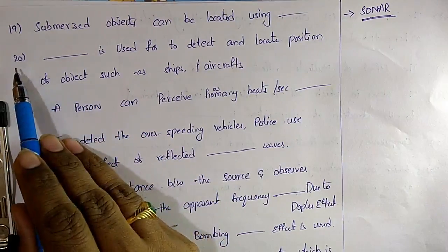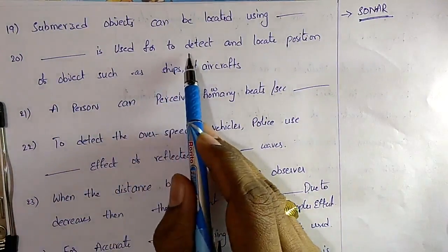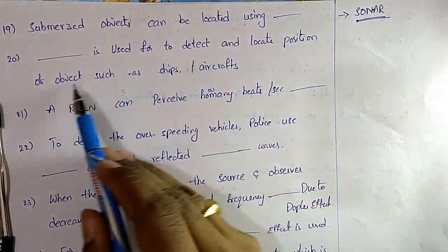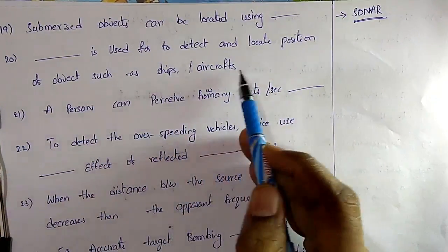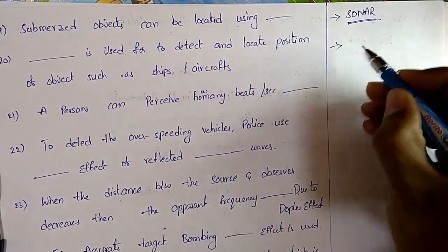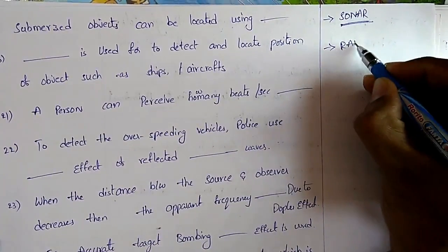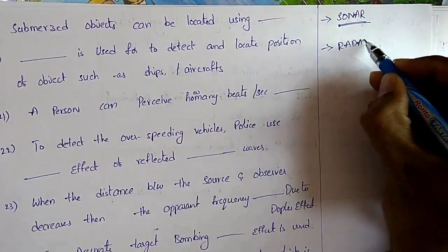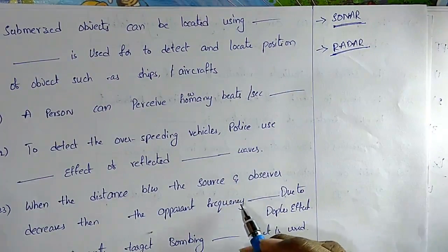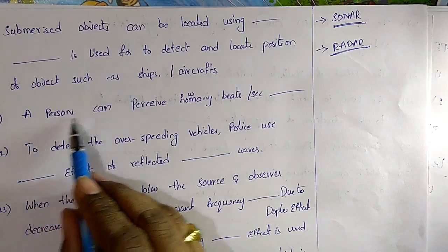Question 20: To detect and locate the position of objects such as ships or aircraft, we use RADAR.